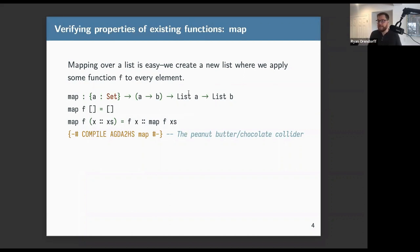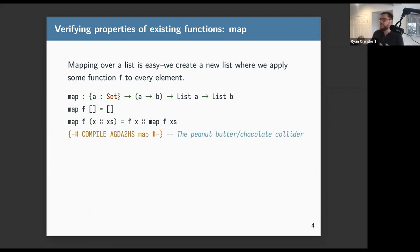The canonical higher-order function in any functional programming language is probably map. When you map a function over a list, you take each element, apply f to it, and recollect the results. In Agda, the base case maps over an empty list and just returns the empty list. In the inductive case, you break apart the head and tail, apply the function to the head, and recursively apply map to the rest. This Agda code looks very similar to Haskell code.